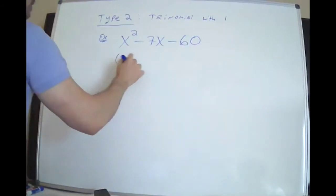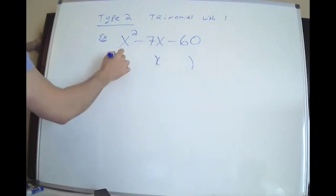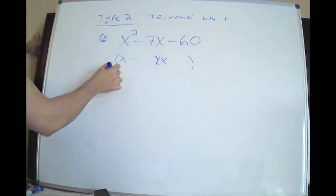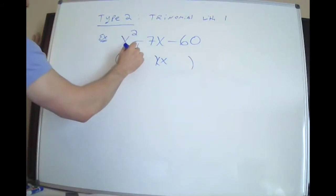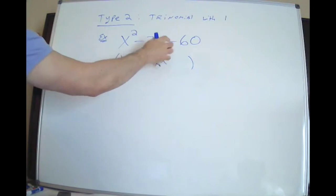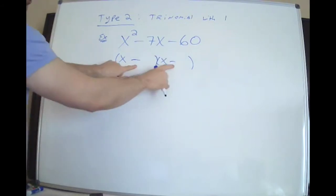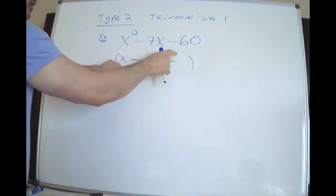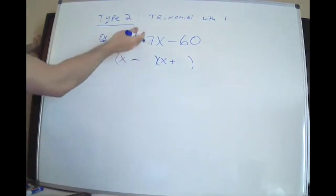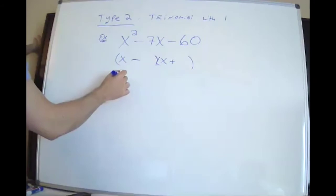So the third one: x squared minus 7x minus 60. A negative here means my signs will be different. Before you even start, put x and x immediately. Drop that sign straight down. This one has to be different because you have a negative here — if they were both negative, a negative times a negative is a positive. So it has to be a plus. Now I'll list the pairs of numbers that multiply to 60. You should always write the pairs down to make sure — one times 60 is always a pair. Sometimes this is the answer, so you can't leave it out.